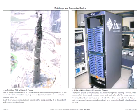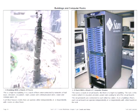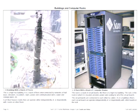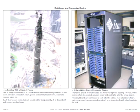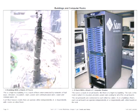Zooming out further, here is a high-rise building still under construction on the left, and a rack of computer boards on the right. The high-rise building is a stack of floors; the computer rack is a stack of circuit boards. Both have vertical services that connect them, but the floors of the building can operate either independently or together with other floors, just like the boards in a rack can operate either independently or collectively.